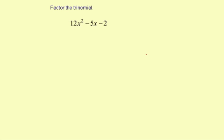Factor the trinomial. We have 12x² - 5x - 2. Now this factoring problem is a little more complicated than the other ones because there's a number in front of the x² besides the invisible one.